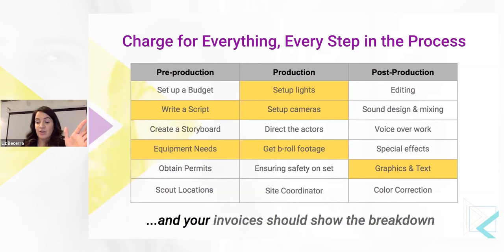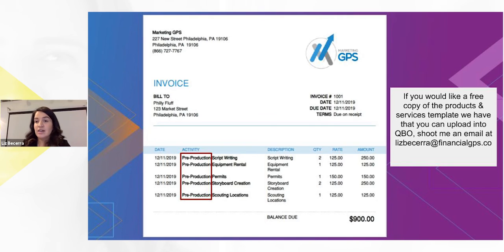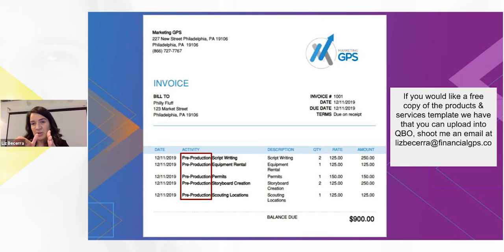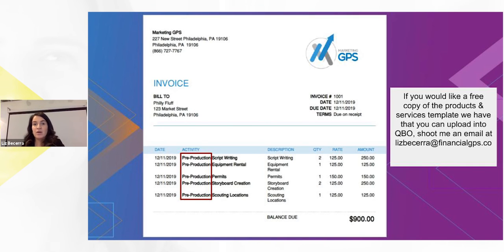So when you send an invoice, you're not going to charge sales tax on your pre-production. But if you send a post-production invoice, you can charge the sales tax for that portion. Let's say you had a project and it was $10,000 — you're not going to pay sales tax on the whole $10,000. You're only going to pay sales tax on the post-production part of it. You definitely want to make sure you're charging your client the sales tax for what they're responsible for, so that you're not paying this out of pocket.